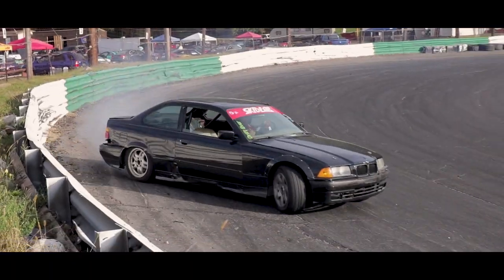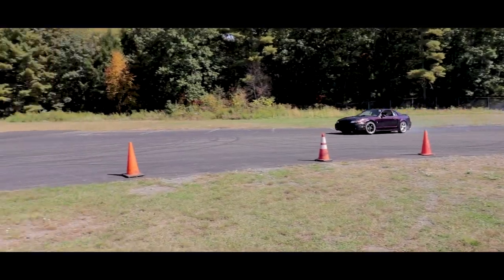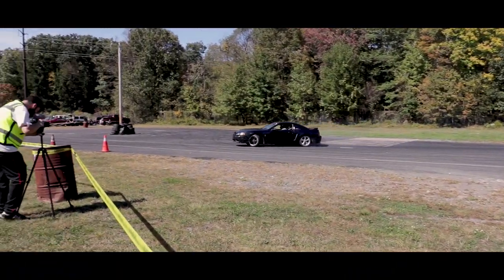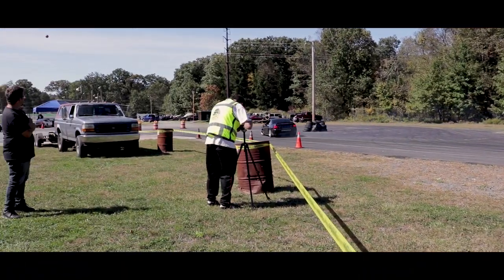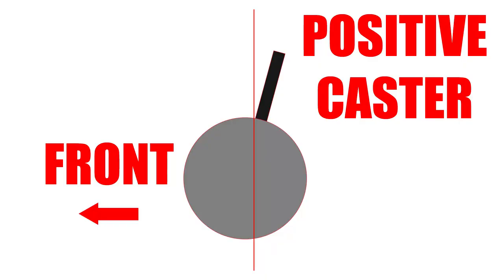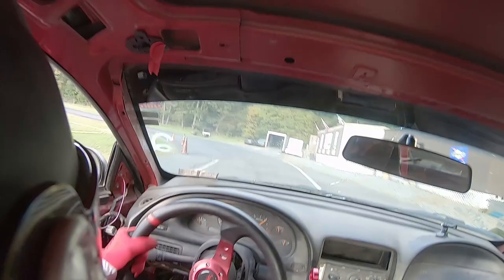Let's move on to the next angle: caster. Caster is the measure of how far forward or behind the steering axis is relative to the vertical axis, viewed from the side. In drifting, you want positive caster. Positive caster helps with steering wheel return and self-steer — the more positive caster you have, the more the car is going to self-steer.